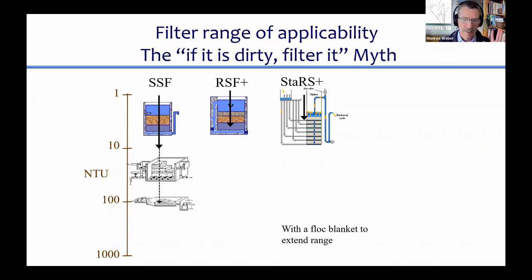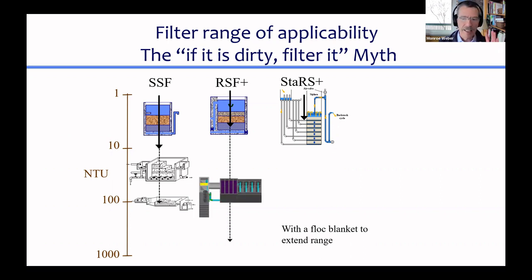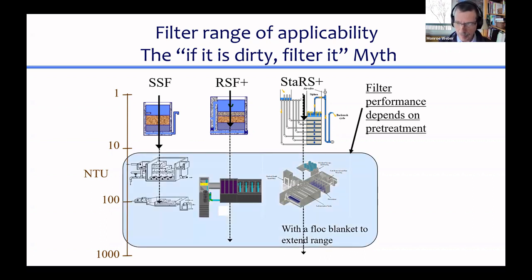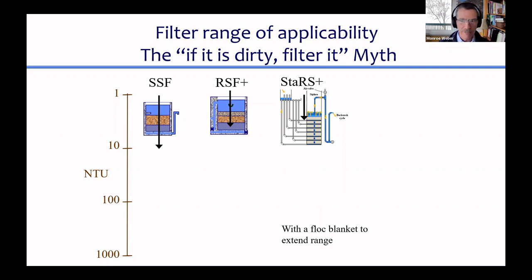For slow sand filters, there's multiple-stage filtration where gravel filters are added upstream to remove some particles. For rapid sand filters, flocculation and sedimentation are added upstream. For STARS filters, flocculation, floc filters, and plate settlers are added upstream. In all cases, filter performance varies depending on how clean the water is coming out of these pre-treatment steps. Filters are good for polishing water that is already pretty clean.